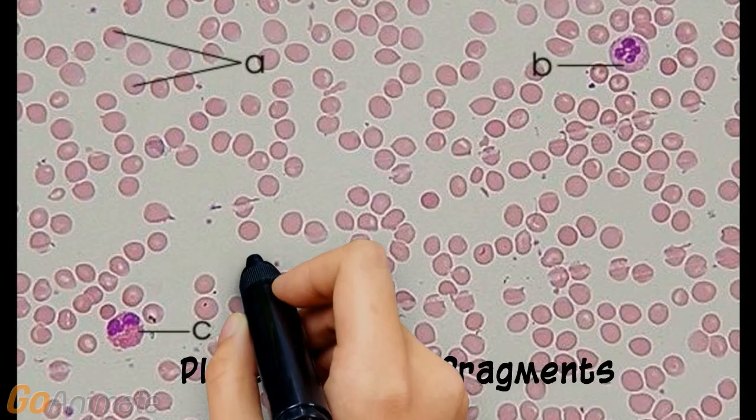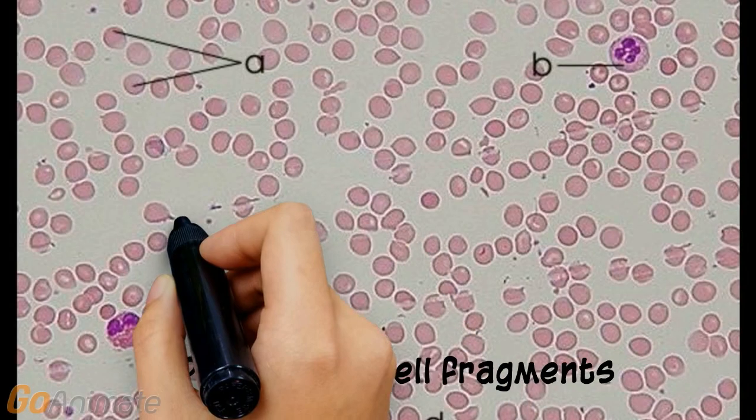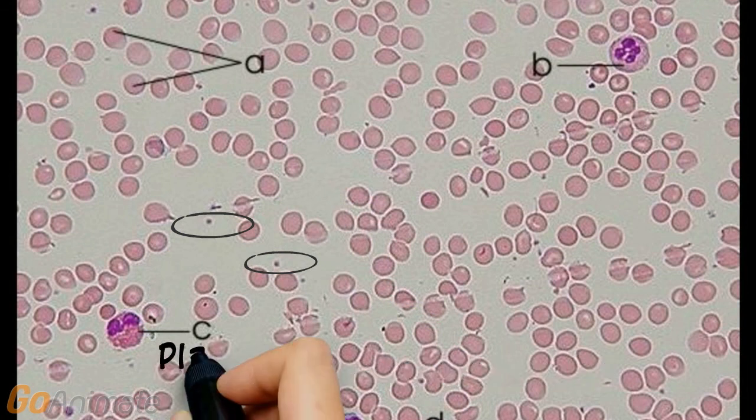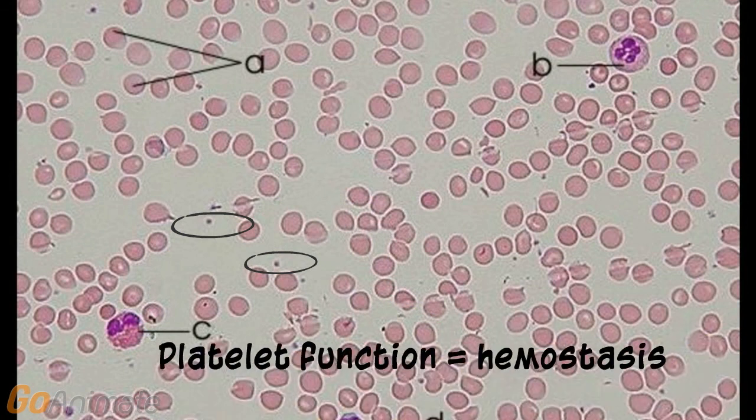Platelets are tiny cell fragments. Platelets function in hemostasis, which is the controlling of bleeding. Platelets form plugs to help stop bleeding.